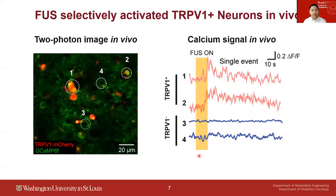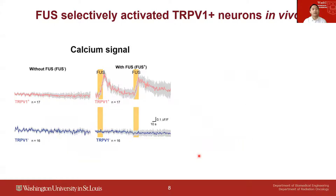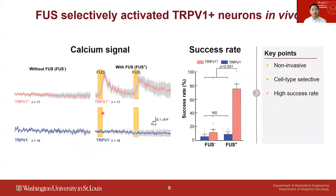This result demonstrated that sonogenetics can selectively activate neurons overexpressing TRPV1. Our study confirmed that only neurons overexpressing TRPV1 can be activated by focused ultrasound stimulation, while wild-type neurons cannot. The success rate of sonogenetics can achieve as high as 75%, suggesting that TRPV1-mediated sonogenetics can achieve non-invasive, cell-type selective neuron modulation with a high success rate.